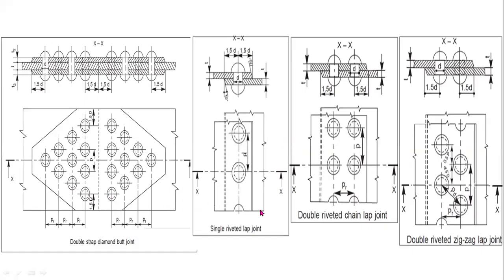These are the different types of riveted joints. This one is a diamond butt joint, this is a double strapped diamond butt joint, and this one is the single riveted lap joint.